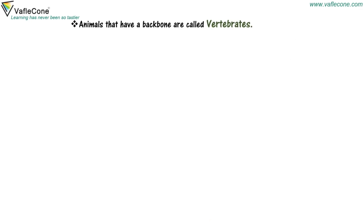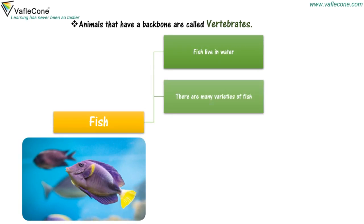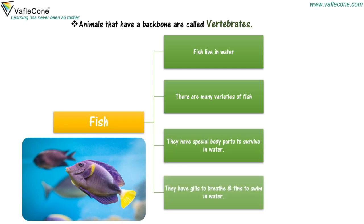Animals that have a backbone are called vertebrates. For example, fish. Fish live in water and there are many varieties of fish. They have special body parts to survive in water — they have gills to breathe and fins to swim.